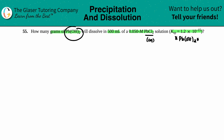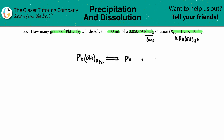Since we have a Ksp value, we write the balanced equation. Solubility products always start with the compound as a solid, so Pb(OH)₂ as a solid dissociates — double arrow for equilibrium — into its two ions: lead and hydroxide. OH is a polyatomic ion that never breaks apart.